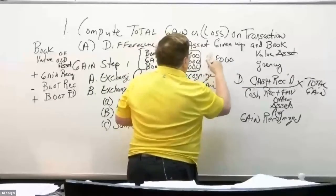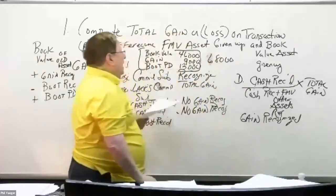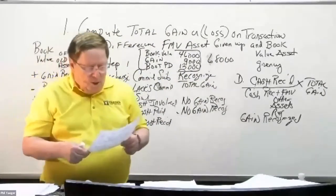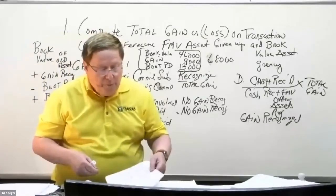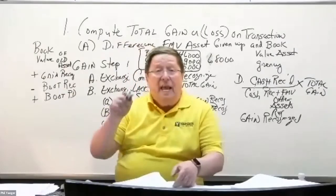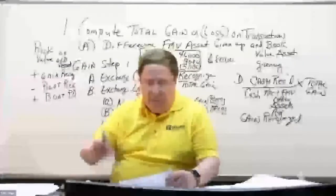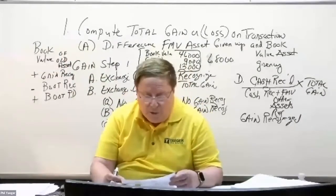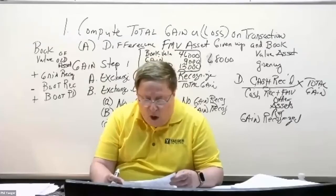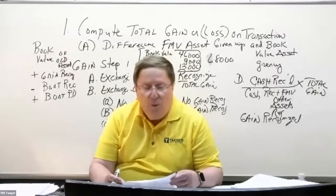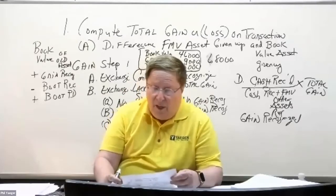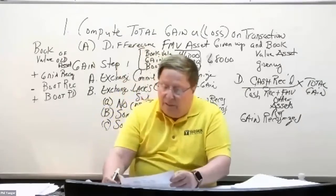The journal entry: debit asset received $68,000, get rid of accumulated depreciation of the old asset, get rid of the cost of the asset given up, record the gain on disposal of $9K, and credit cash $13K. Does everyone see that? When a transaction has commercial substance, you recognize the entire gain because it's increasing your cash flow.